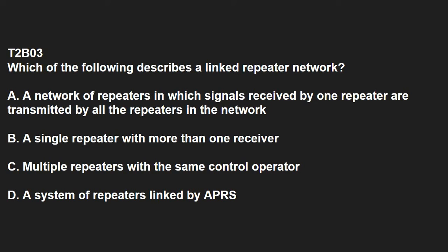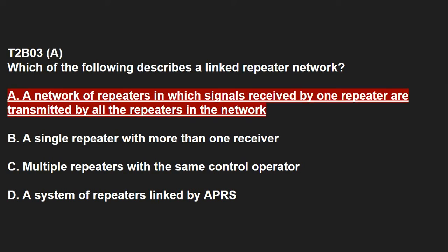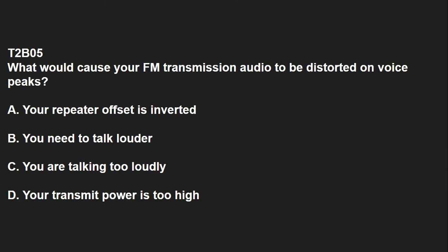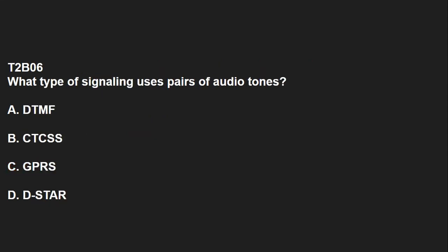T2B03: Which of the following describes a linked repeater network? A network of repeaters in which signals received by one repeater are transmitted by all the repeaters in the network. T2B04: Which of the following could be the reason you are unable to access a repeater whose output you can hear? It could be improper transceiver offset, using the wrong CTCSS tone, or using the wrong DCS tone. T2B05: What would cause your FM transmission audio to be distorted on voice peaks? You're talking too loudly. T2B06: What type of signaling uses pairs of audio tones? That is DTMF.